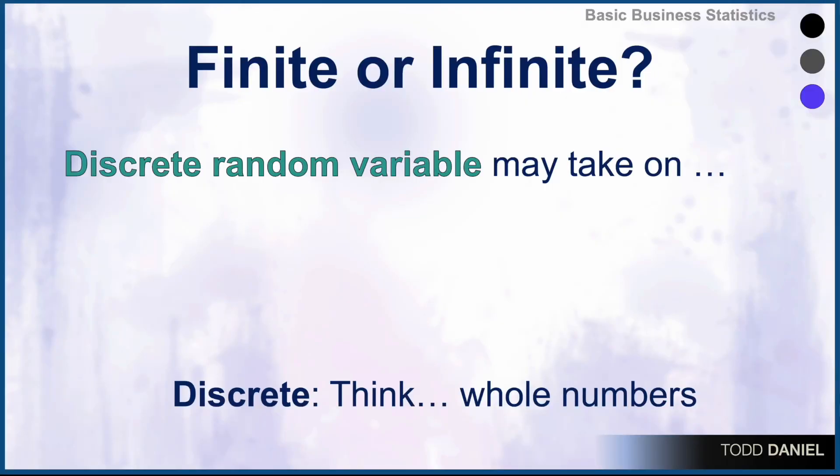A discrete random variable will always be integers. However, those integers may be finite or infinite. In a finite random variable, the discrete random variable takes on a finite or limited number of values. How many quarters did you play in the game? The answer has to be zero, one, two, three, or four quarters. You cannot have fewer than zero, or more than four.